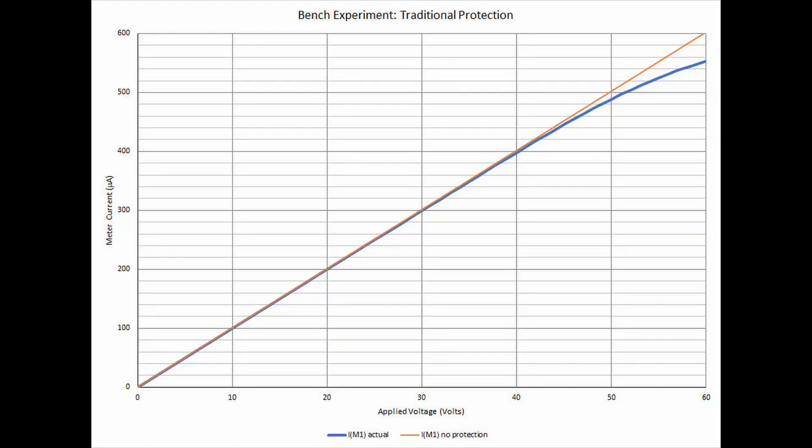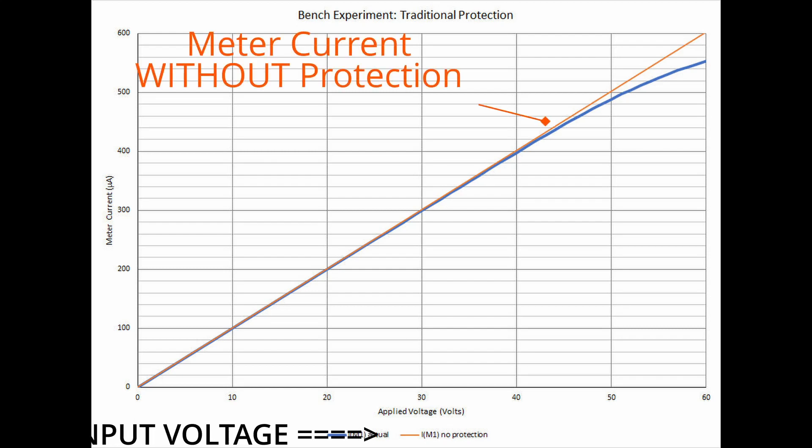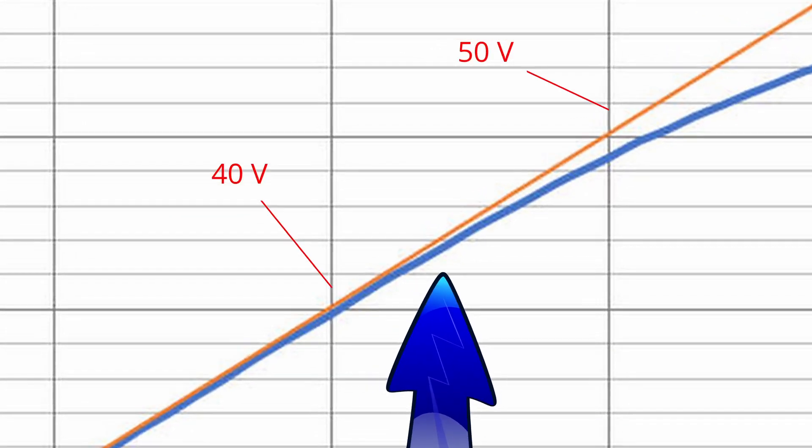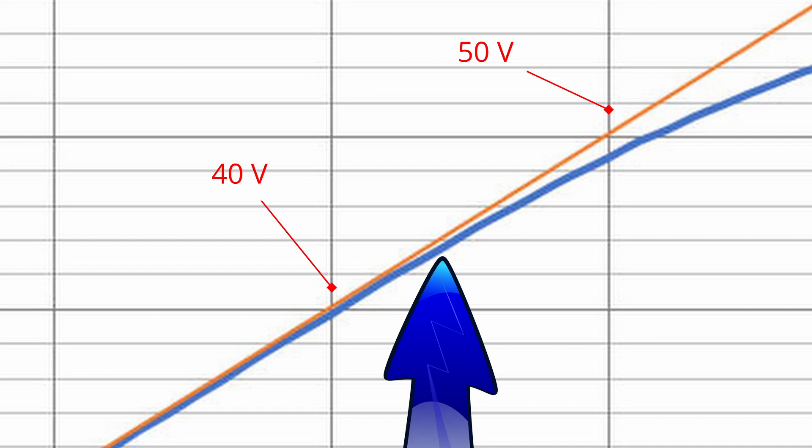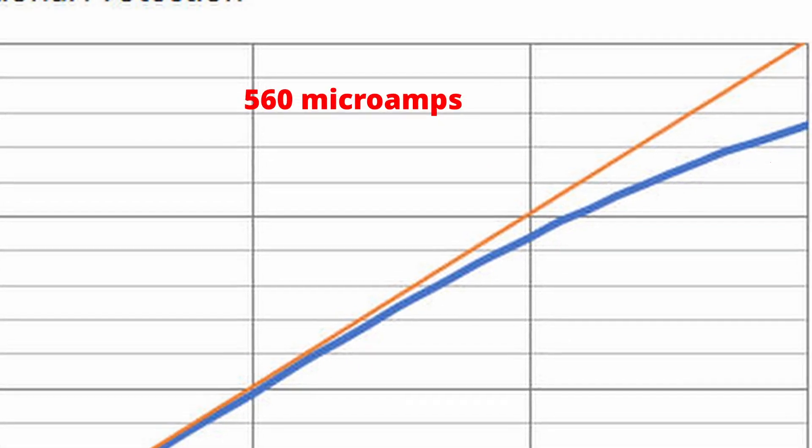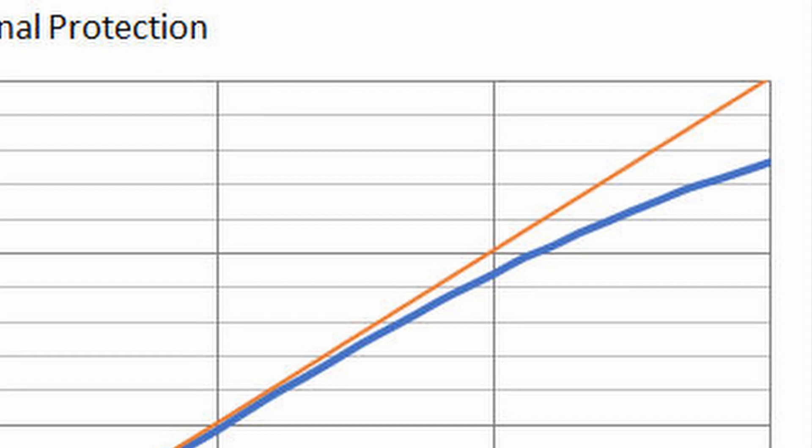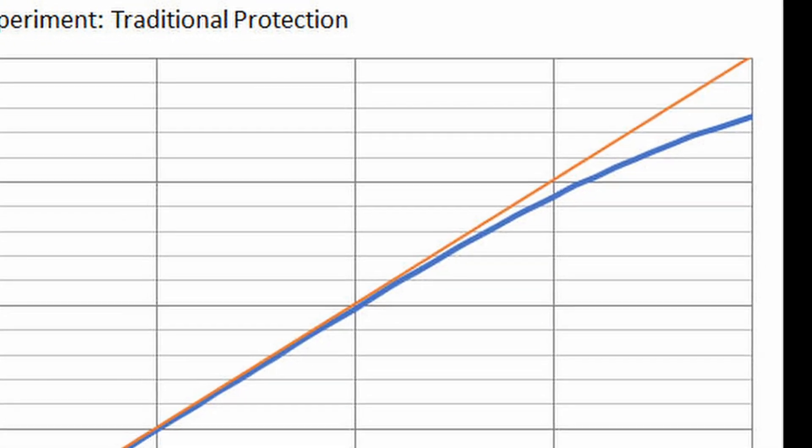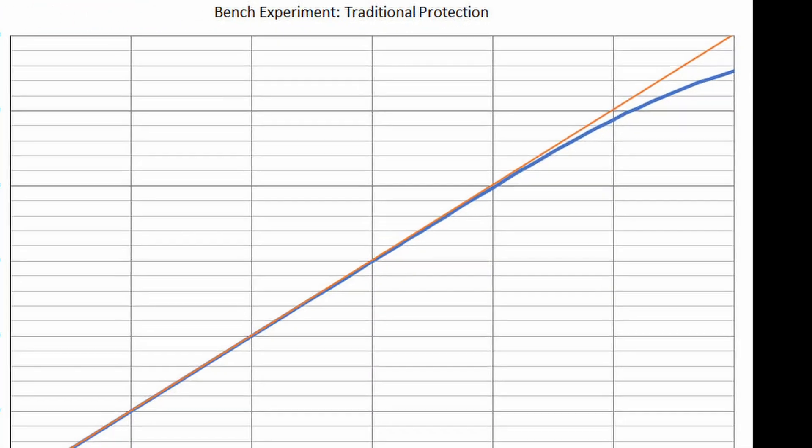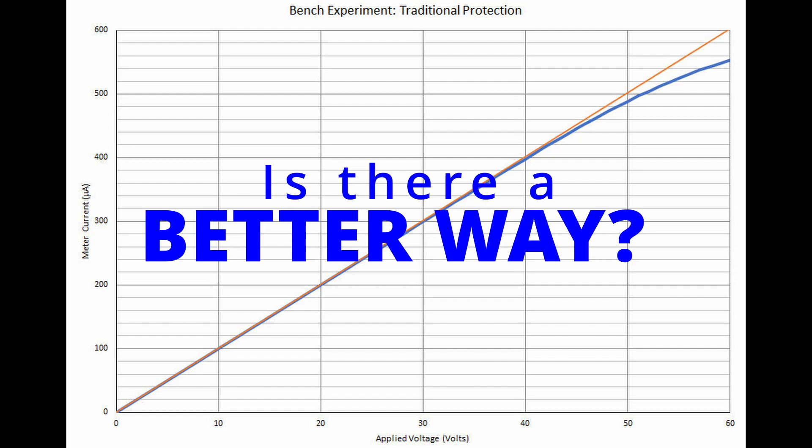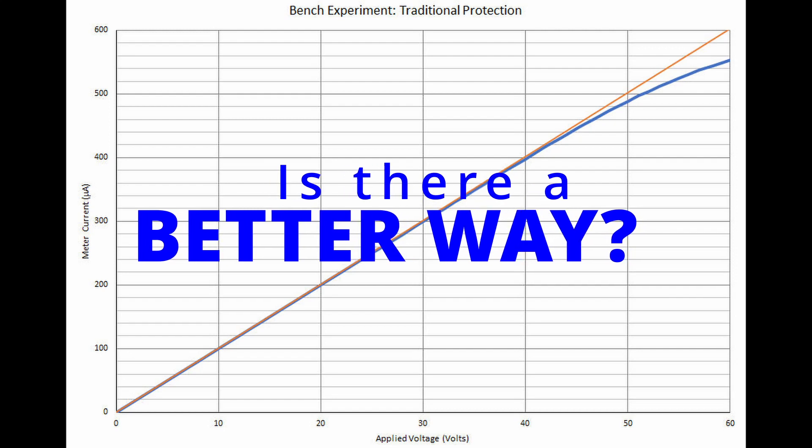And here are the results. The orange line is what we expect if we have no protection at all. The blue line is the actual bench measurement with traditional protection in place. You can see that the protection doesn't even begin to give us any benefit until we reach over 40 volts. With 60 volts on our input, we are pushing 560 microamps through a 100 microamp meter movement. The performance in the negative direction is going to be no different because the means of protection hasn't changed. This makes me think that there has to be a more effective method to protect my 10 volt meter without going crazy with electronic wizardry.